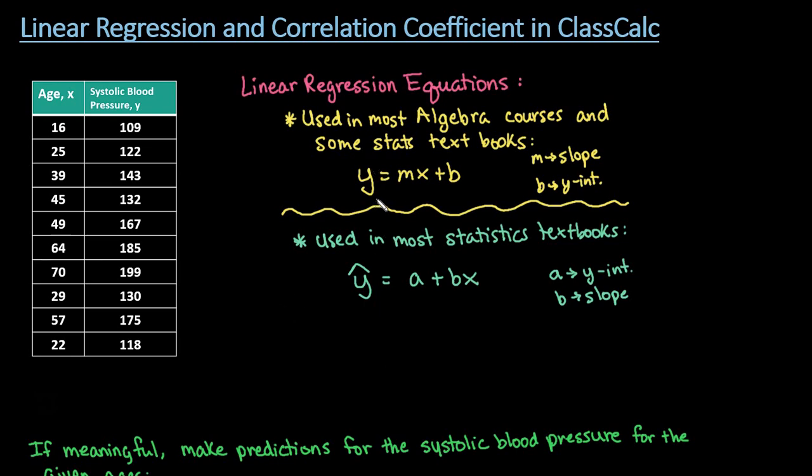If you're in an algebra course, you're probably going to see y equals mx plus b. In some statistics textbooks, they put a hat over the y to let you know it's a prediction instead of the actual value of y. So you may see y hat equals mx plus b, where m represents the slope and b represents the y-intercept.